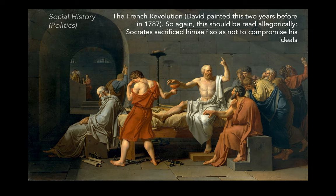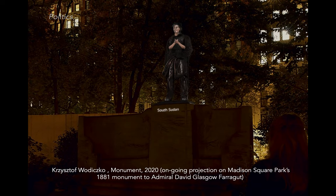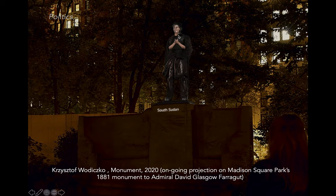There are all sorts of examples of contemporary works that are political in this way. This is a great one — Christoph Warisko, and I think it's still ongoing in Madison Square Park. He does wonderful works where he projects images onto statues — old statues that are very much in the news. He uses the statue almost like a screen for the projection of an individual. In this series, the individuals projected are refugees who tell their stories about what they've gone through, with a speaker so you can actually hear them. This is an example of a contemporary work that's certainly quite political.